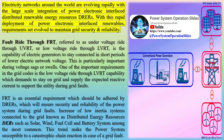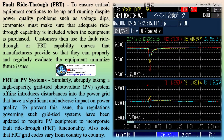Fault Ride-Through (FRT), referred to as Under-Voltage Ride-Through (UVRT) or Low-Voltage Ride-Through (LVRT), is the capability of electric generators to stay connected during short periods of lower electric network voltage. This is particularly important during voltage sags or swells. One of the important requirements in the grid codes is the LVRT capability, which demands staying on grid and supplying the expected reactive current to support the utility during grid faults.